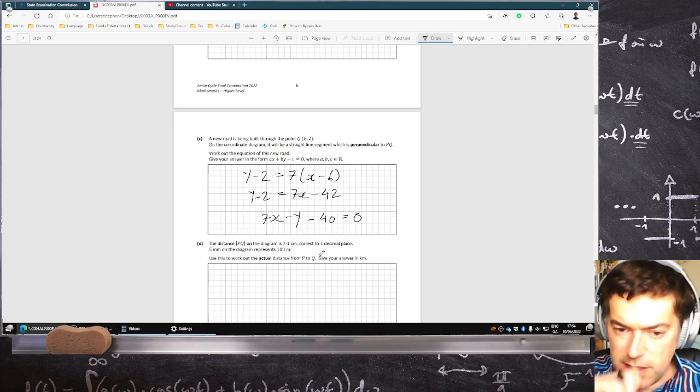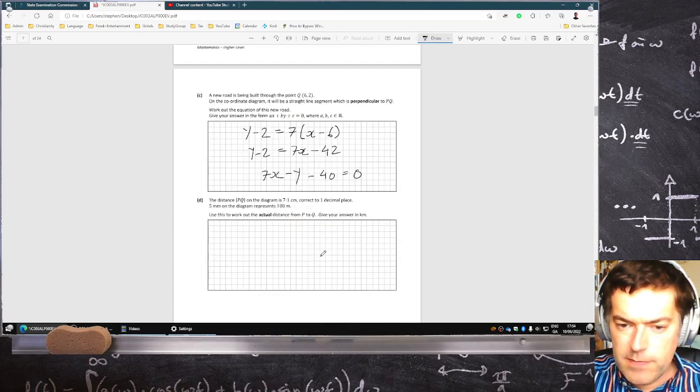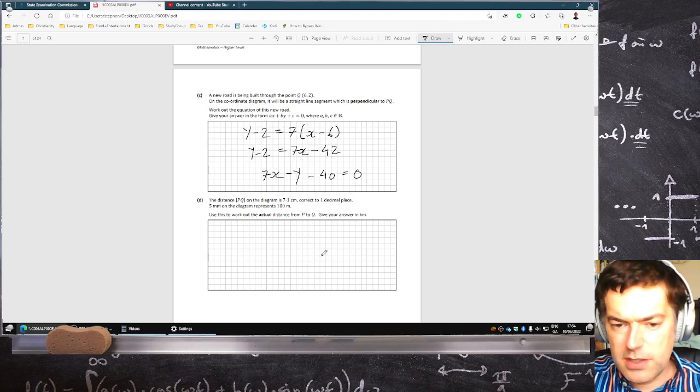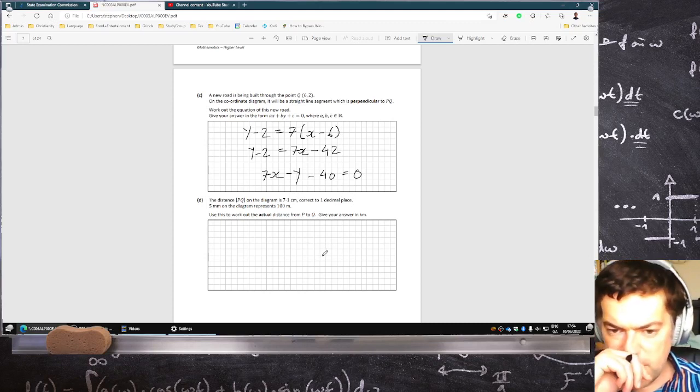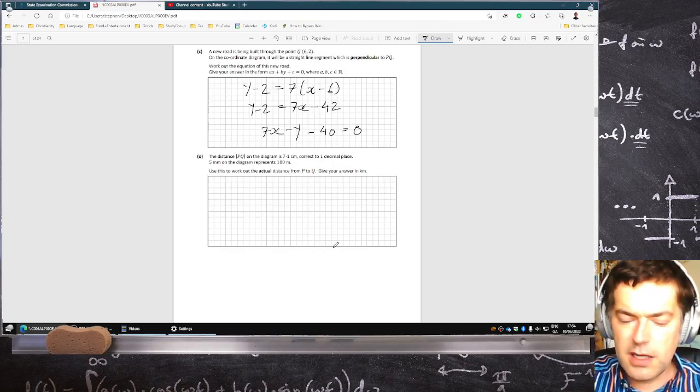The distance PQ on the diagram is 7.1 centimeters, correct to one decimal. Five millimeters on the diagram represents 100 meters. Use this to work out the actual distance PQ. Okay, so PQ is 71 millimeters, 7.1 centimeters.